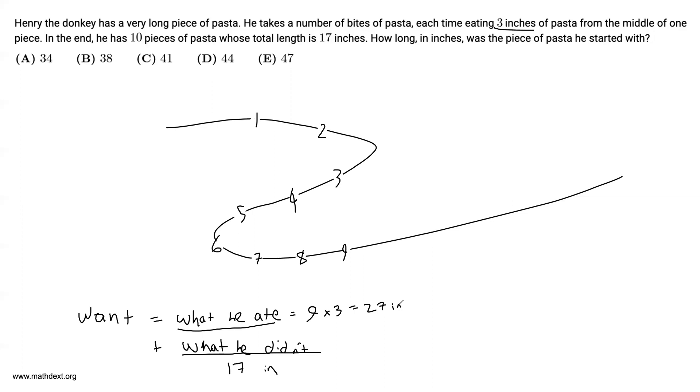So how long was Henry's piece of pasta in the beginning? It was 27 plus 17, which is 44. Answer is D and we are done. Thanks for watching and I will see you next time.